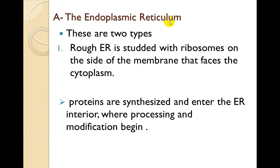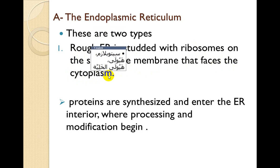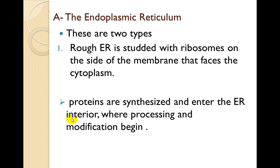First, the endoplasmic reticula — these are two types. Rough endoplasmic reticulum is known as rough because it is studded with ribosomes. الريبوسومات تكون attached to the rough endoplasmic reticulum على الجزء الخارجي المواجه للسايتوبلازم. Proteins are synthesized and entered into the endoplasmic reticulum interior, where processing and modification begins.